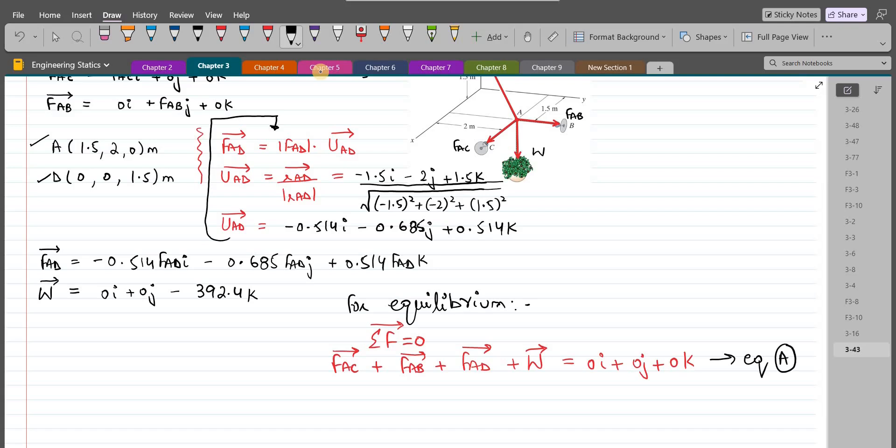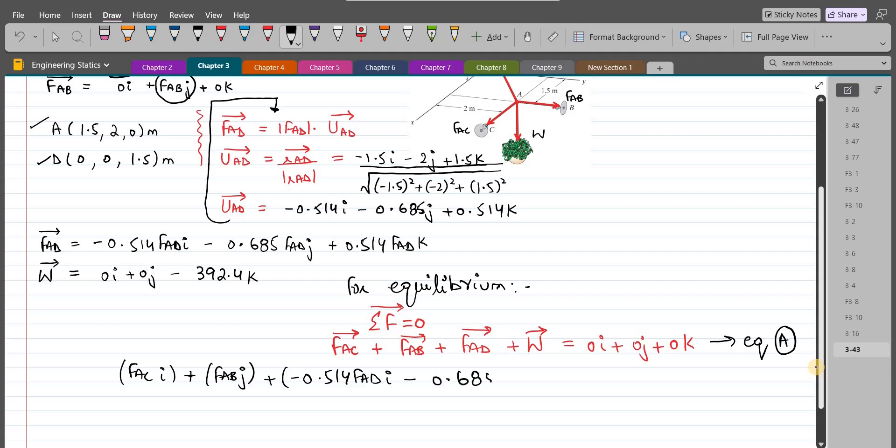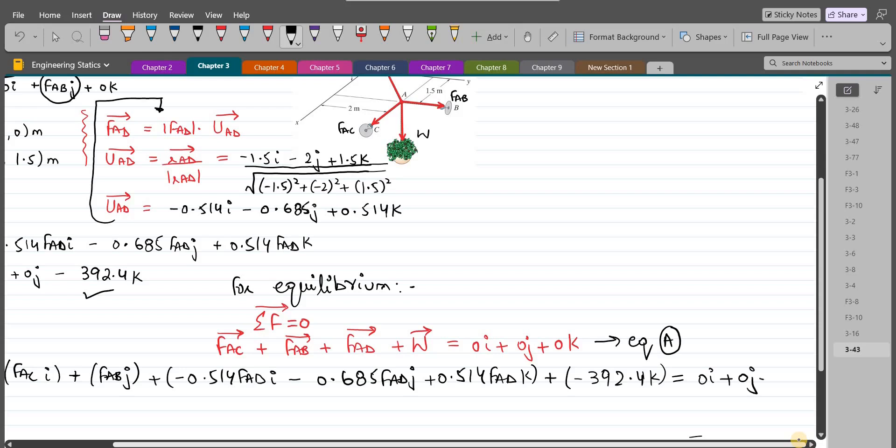If I substitute the values of FAC, FAB, FAD, and the weight force into equation A, the equation would become: for FAC we just have an I component, so FACI. For FAB we just have a J component, so plus FABJ. For FAD we have negative 0.514FADI, negative 0.685FADJ, plus 0.514FADK. Plus for the weight force we just have a K component, so negative 392.4K, equals 0I plus 0J plus 0K.